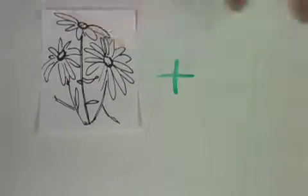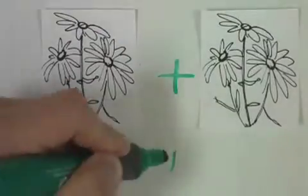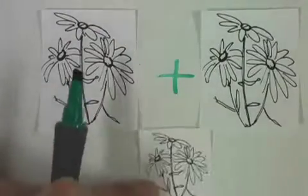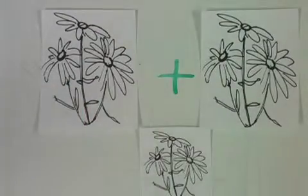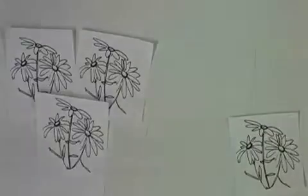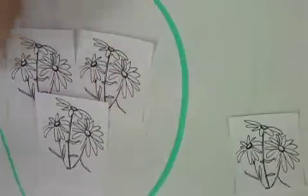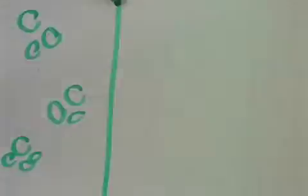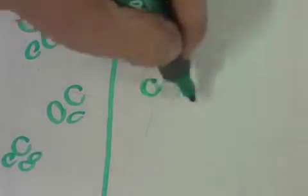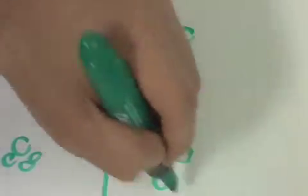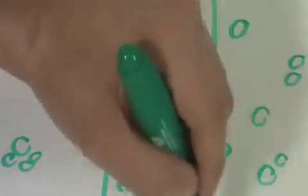A population is a group of interacting members of the same species that have the opportunity to mate with each other. These populations can be described by their distributions as clumped, uniform, or random. Sounds easy enough, but these patterns can be based on scale.